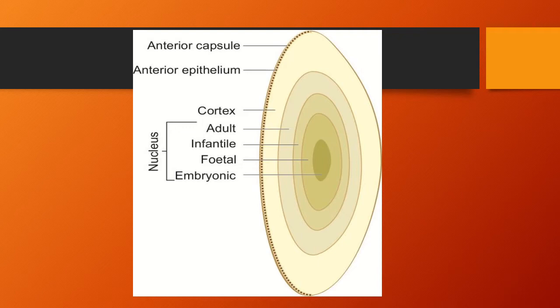The nucleus of the lens is divided into four types. Innermost is the embryonic, then the fetal nucleus, then infantile, then adult nucleus, and after the nucleus there is the cortex, cortical form. Then there is the anterior epithelium and the posterior epithelium.